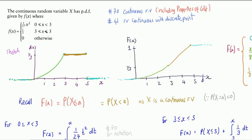In problem 70 I showed you how to derive the CDF from a PDF with a simple example. I did a tougher question in problem 41 where the random variable is neither discrete nor continuous. This one sits between the two, so watch problem 70 before watching this one.